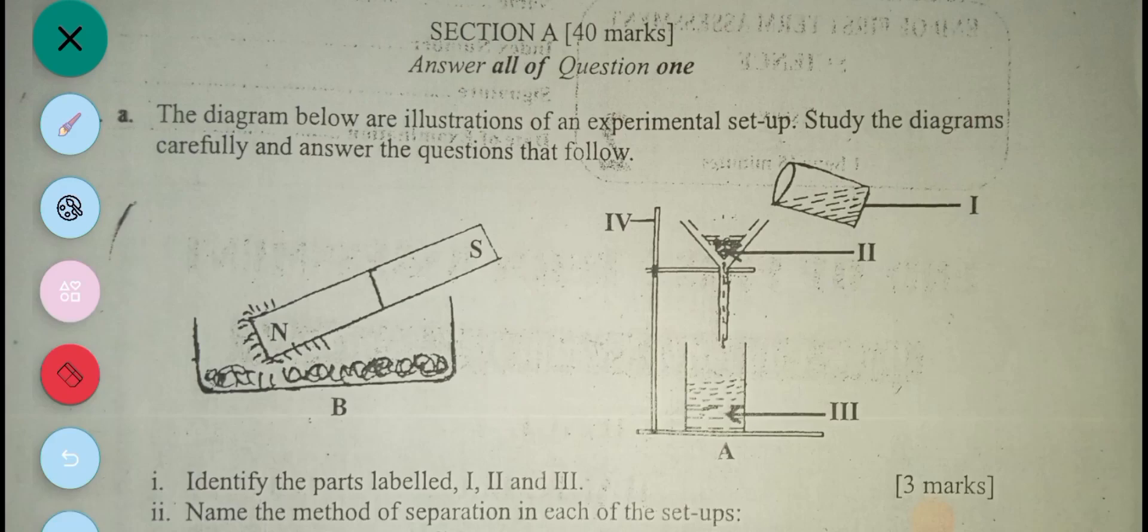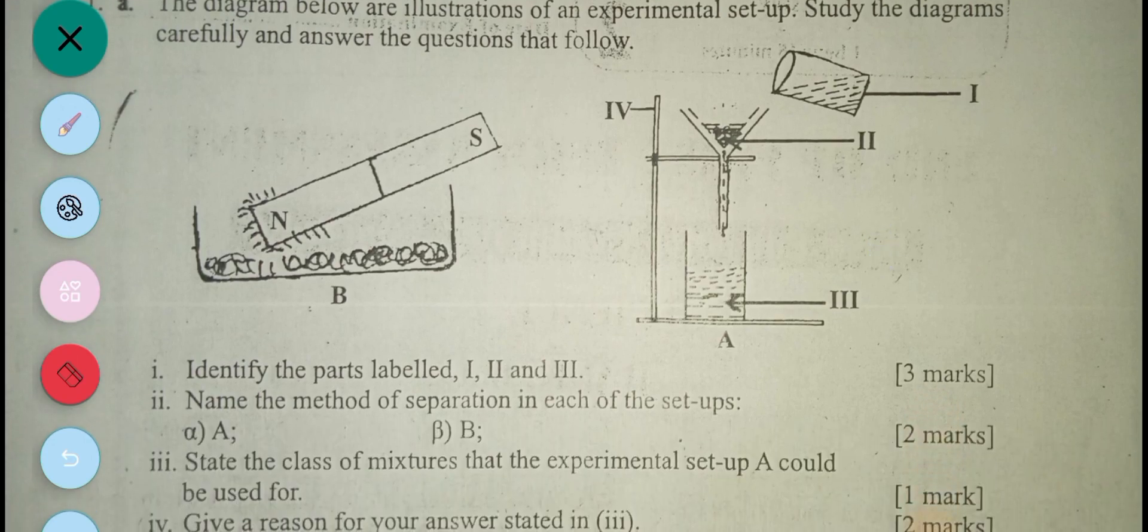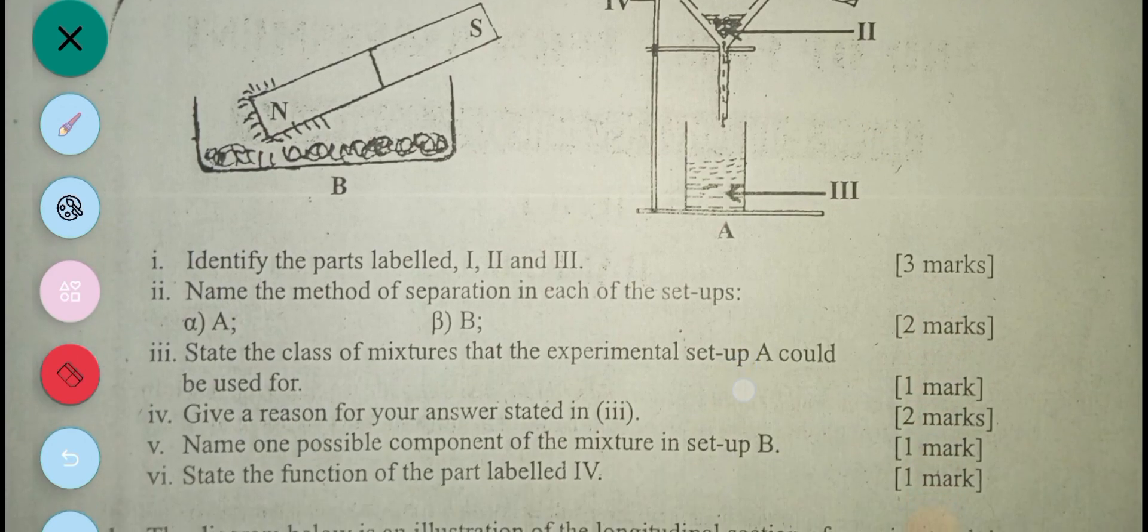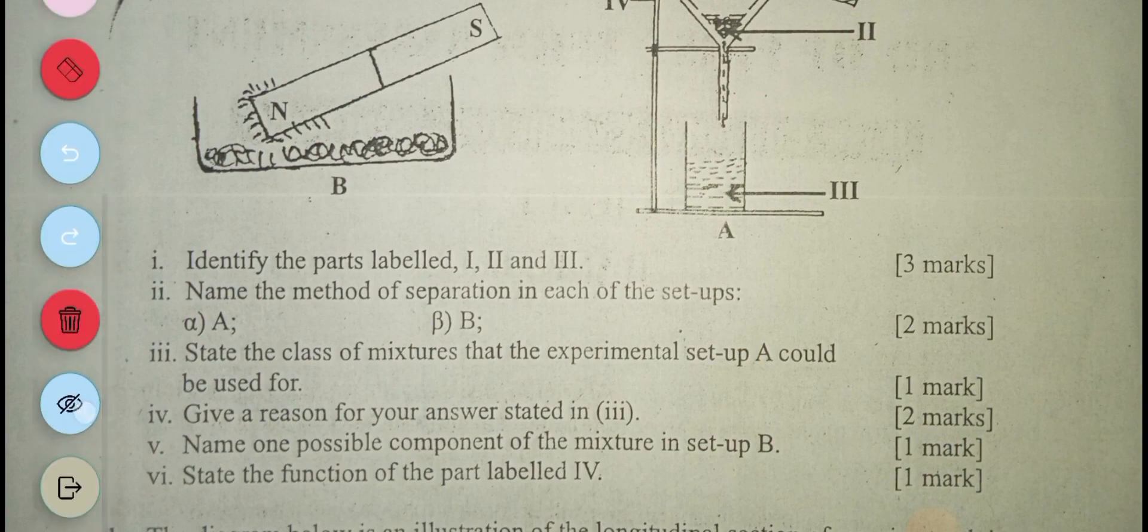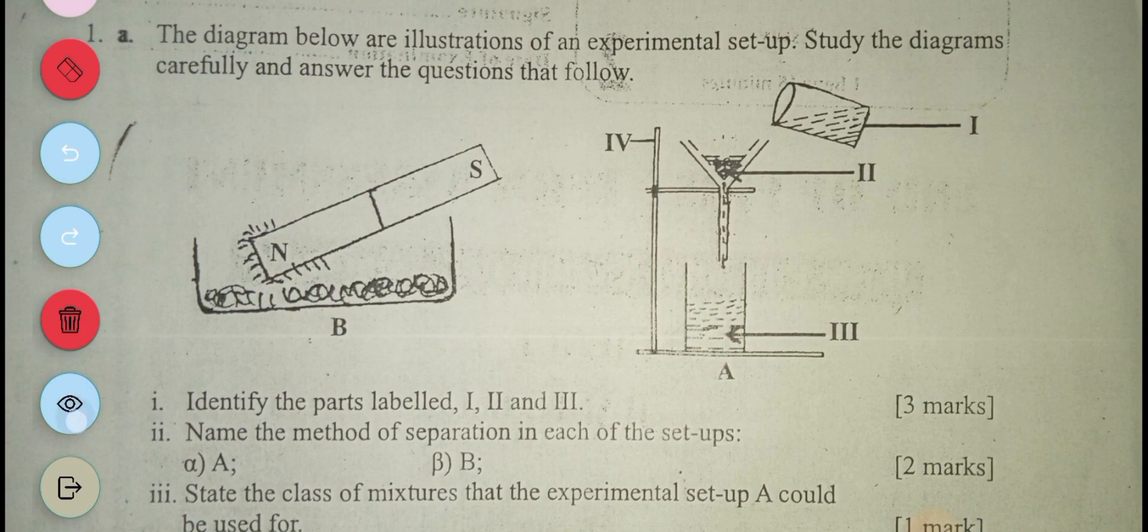The diagram below are illustrations of an experimental setup. Study the diagrams carefully and answer the questions that follow. You have on your right and the left. What you have on your right is A and what you have on the left is B. The first question asks you to name the parts labeled I, II, and III.